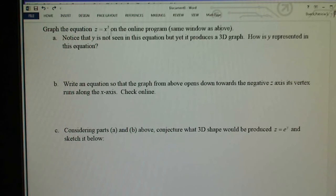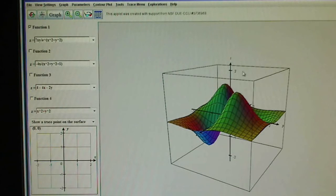Notice that y is not seen in this equation, this is just z equals x squared. y is not seen but yet it produces a 3D graph. Let's take a look at what that means.